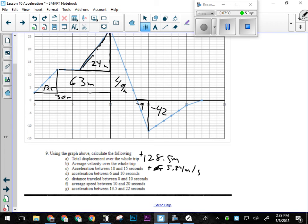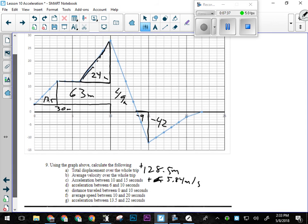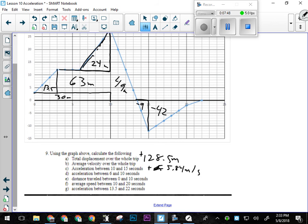Average speed between 10 and 20 seconds. So we have to know what our distance traveled was between 10 and 20 seconds. So 20 seconds is over here. So we would take our distance here, distance here, and just to 20. And we would add them together and divide by the time, by 10 seconds.